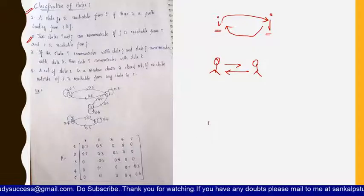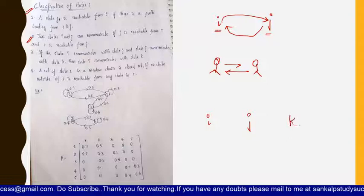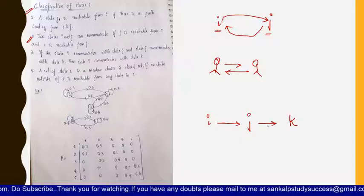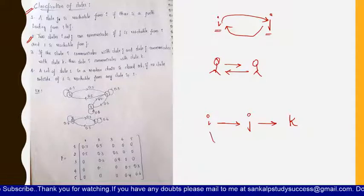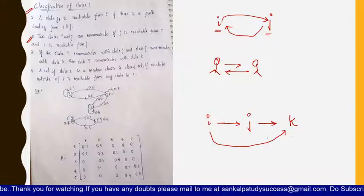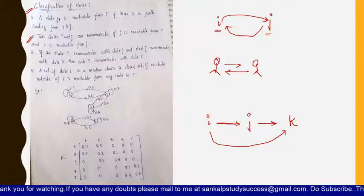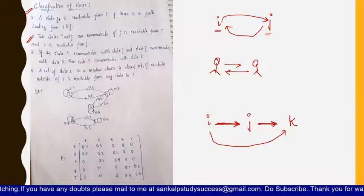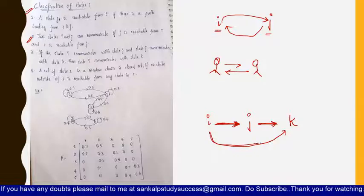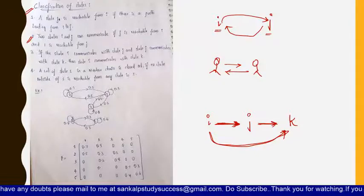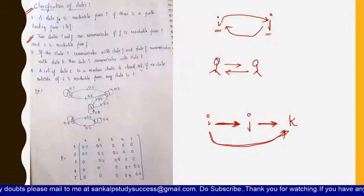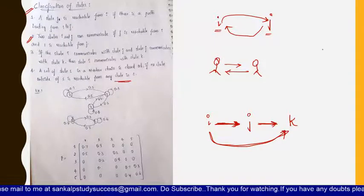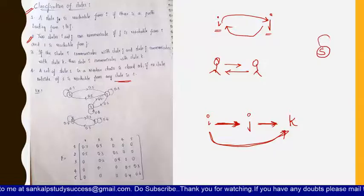If state i communicates with state j, and state j communicates with state k, then automatically state i can communicate with state k. If you see this diagram, you can easily say that i is communicating with k. Now there is a state S in a Markov chain which is a closed set if no state outside S is reachable from any state in S.